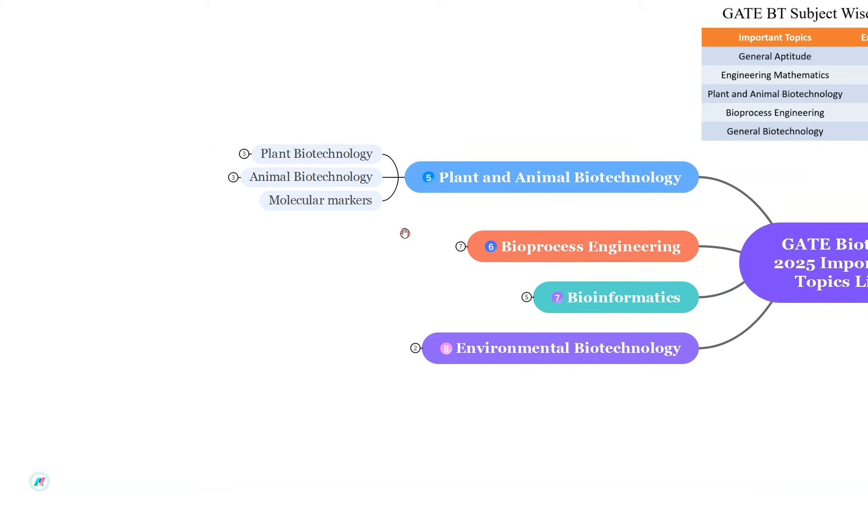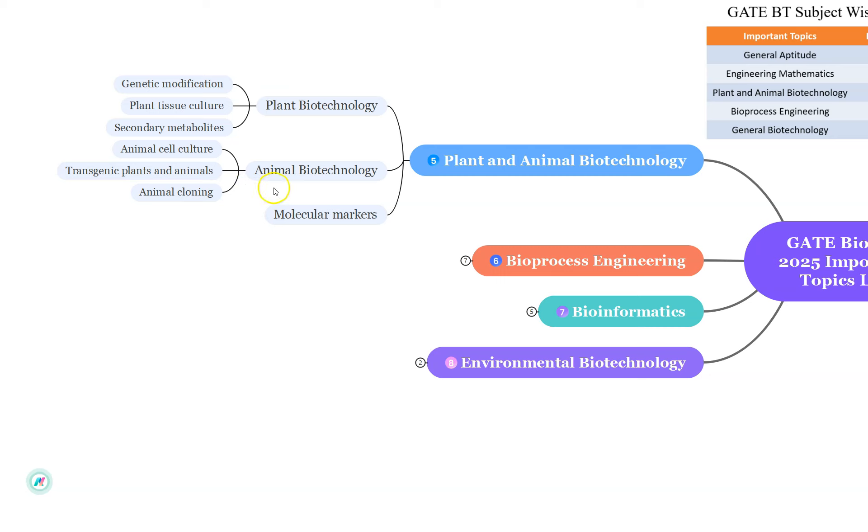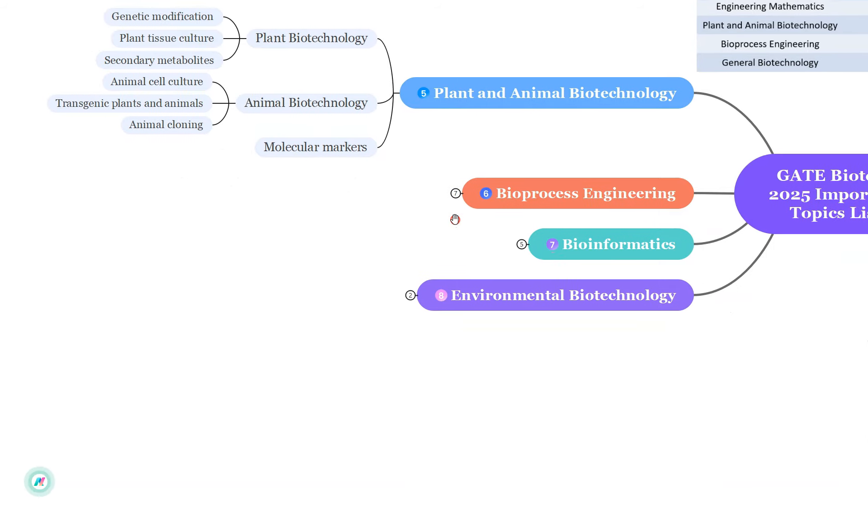So from Plant and Animal Biotechnology, specifically from Plant, focus on genetic modification, the different plant tissue culture techniques and also the secondary metabolites. Whereas from Animal Biotechnology, focus on the components of the animal cell culture techniques and the process of transgenic plants and animals and also the process of animal cloning. Don't forget to study about the molecular markers as well.